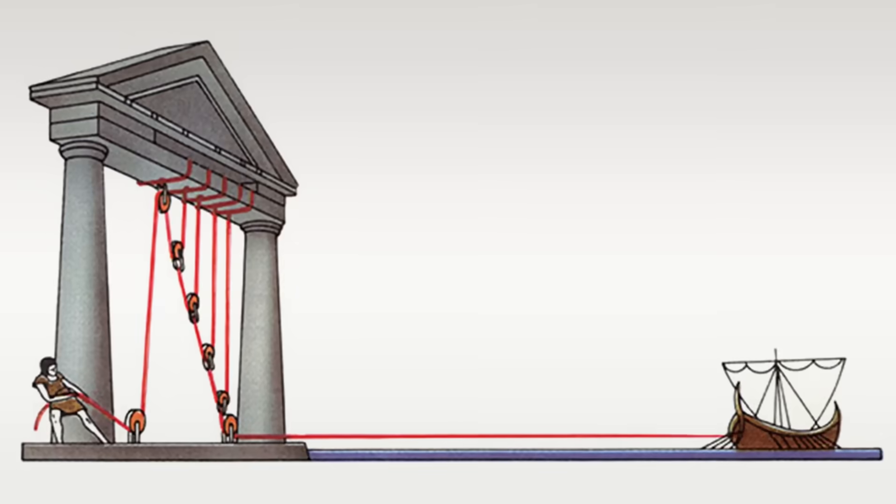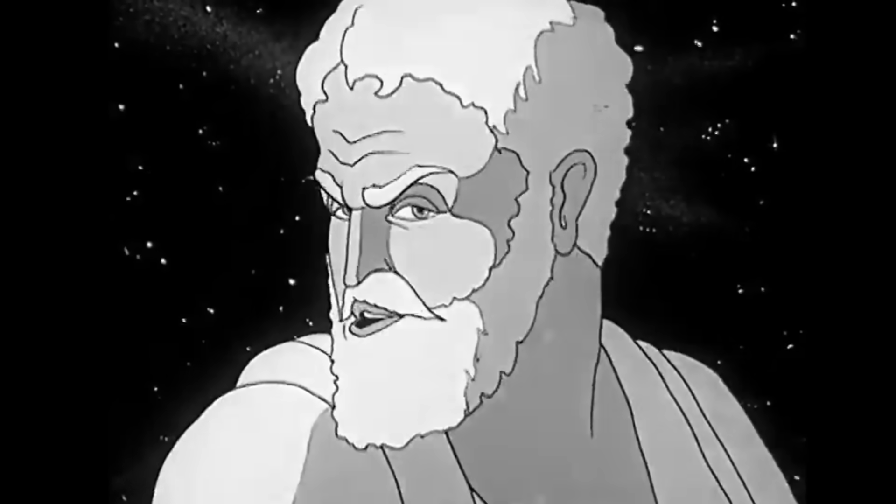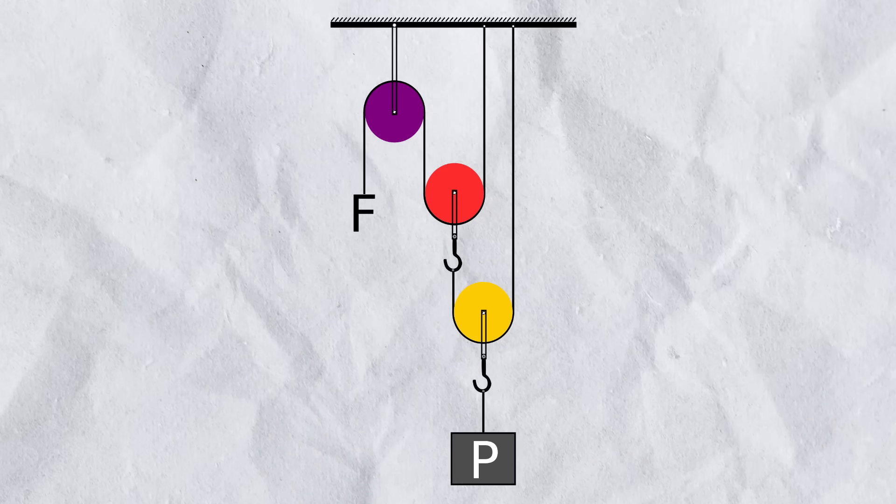According to legend, Archimedes was able to lift an entire ship on his own using a network of pulleys. He was able to achieve this because of a very fun trick in how pulleys work.